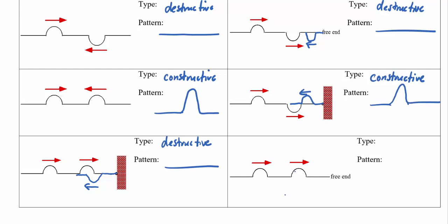Same thing here, when this crest runs into this free end, when it reflects back, it will also reflect back without inversion and it'll run into the next crest resulting in constructive interference. The pattern will be a large crest.